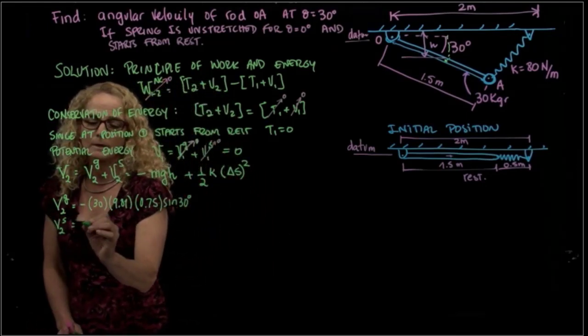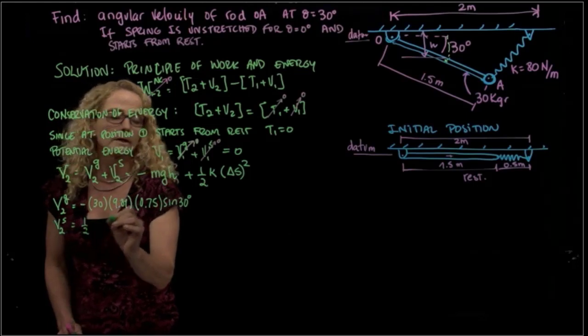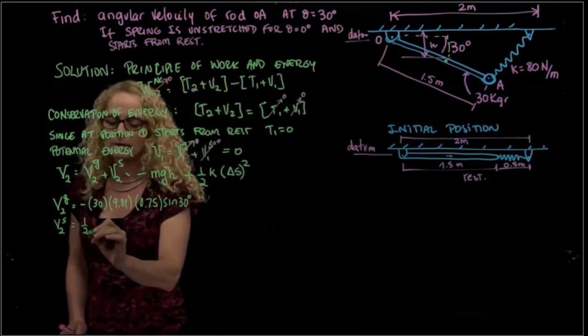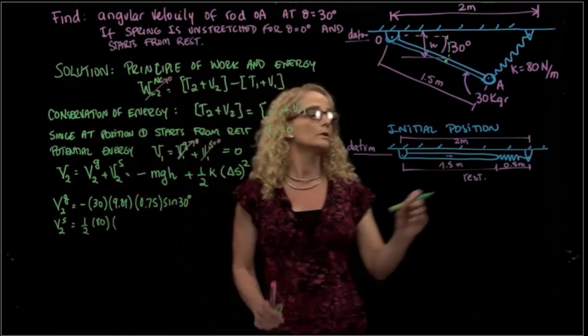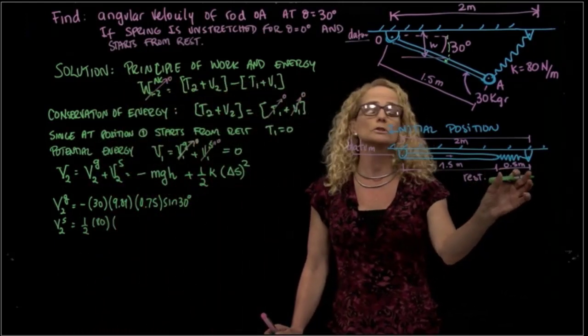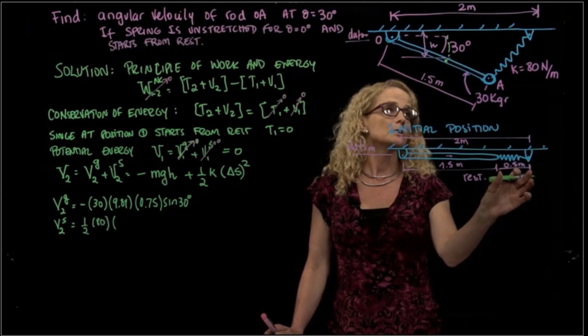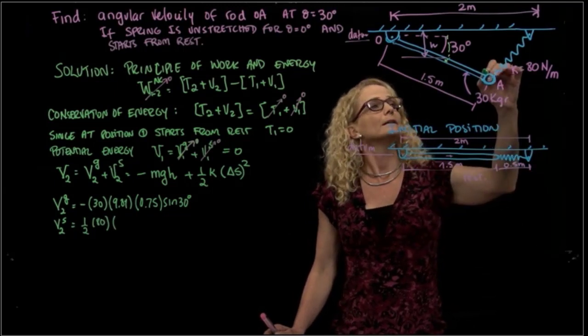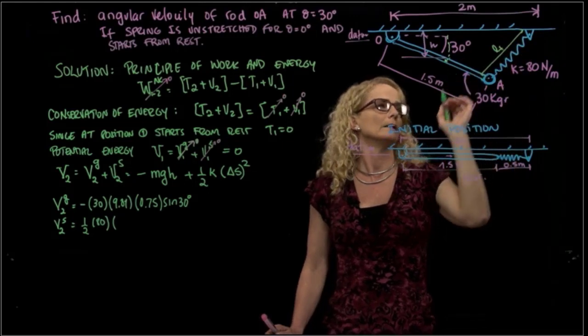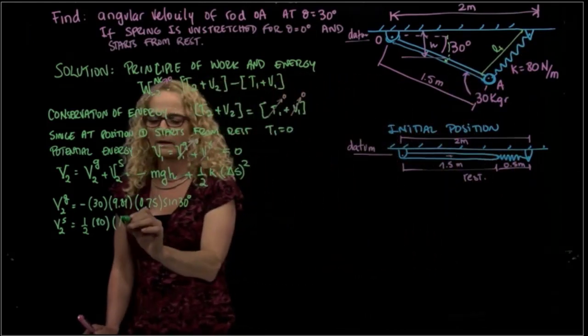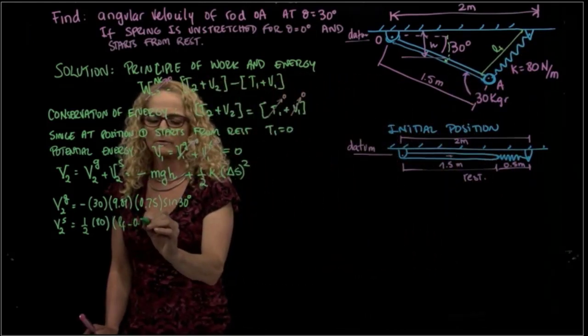How about the potential energy? The spring will be 1/2 k is known and is 80. And how much is the stretched position? So we know that the initial position, which is the unstretched position, is 0.5. We have to find this final length. Let's call it final L. So that will be Lf minus 0.5 squared.